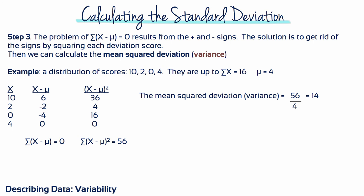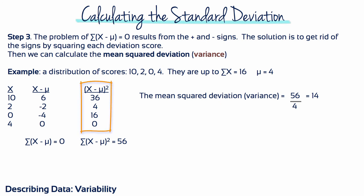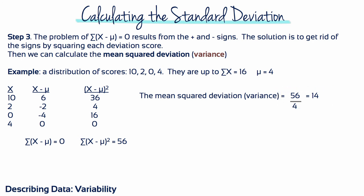Step 3. The problem of the sum of the deviation scores equaling 0 results from the positive and negative signs. The solution is to get rid of the signs by squaring each of the deviation scores. Then we can calculate the mean squared deviation, which is also called the variance. So if we stick with the distribution of 10, 2, 0, and 4, the squared deviation scores are 36, 4, 16, and 0. Adding these up gives us a total of 56. We divide this by 4 — because we've got 4 scores — so 56 divided by 4 equals 14. That's the mean squared deviation, which we also call variance.